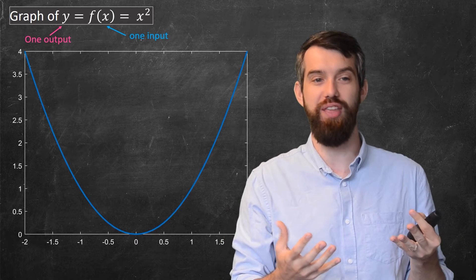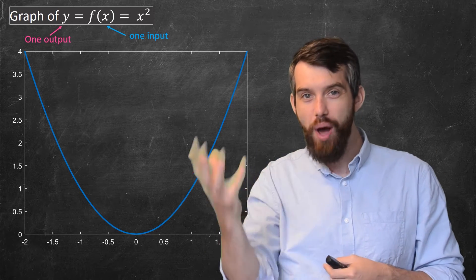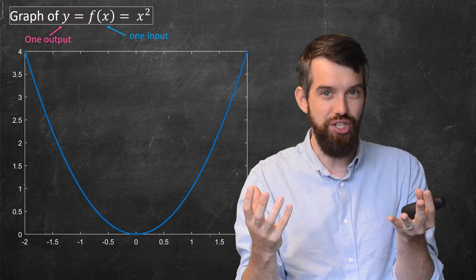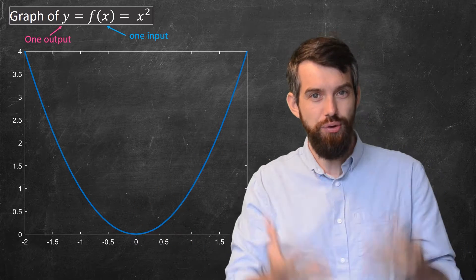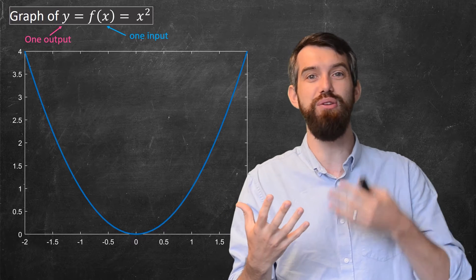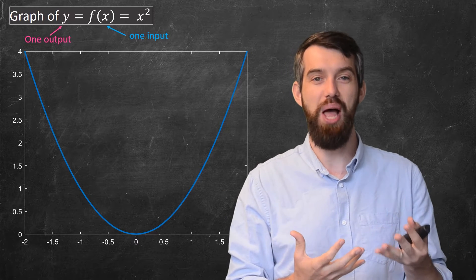Maybe the x and y would be called different things, but it was a function from one dimension to one dimension, and the graph, which was two-dimensional, was able to capture the input values and the output values at the same time.